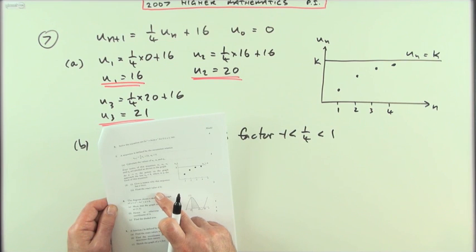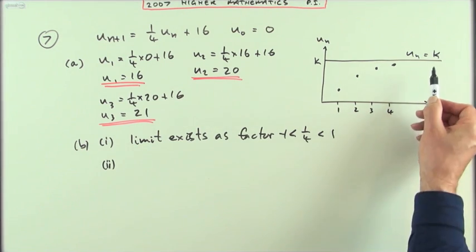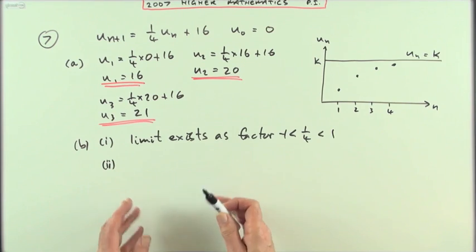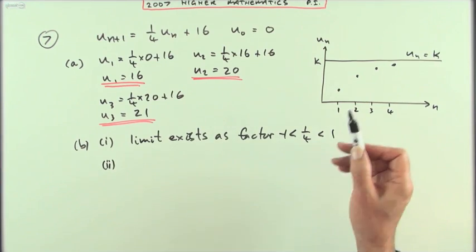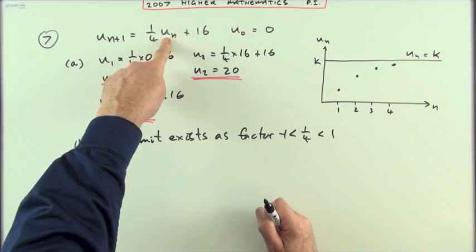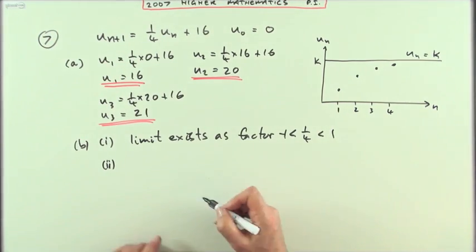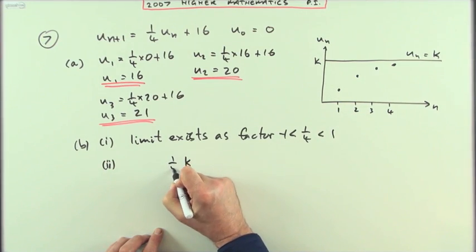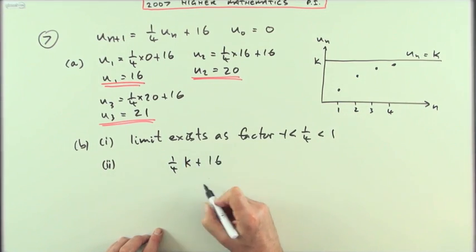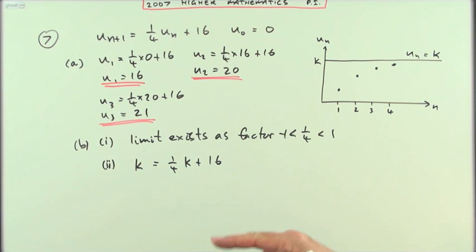Find the exact value of that limit, K. There are two ways you could state the formula. I'll do it algebraically first. You'll have reached the limit when, at any particular value, working out the next value gives you the same value again. You'll have reached the limit when the value is K, and you find a quarter of it and add on 16, the answer is still K. So you're stuck at that limit.